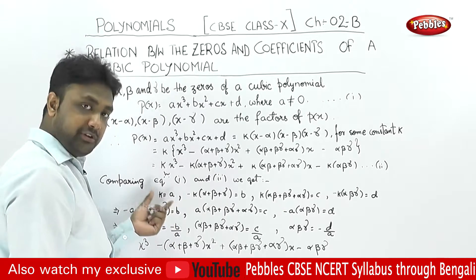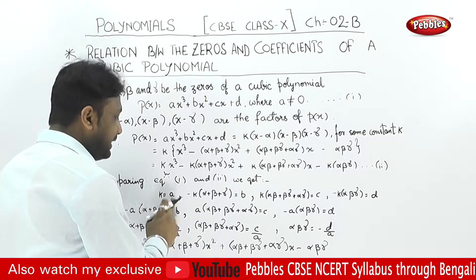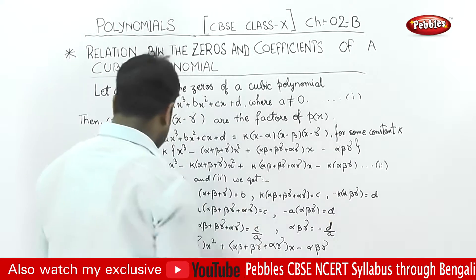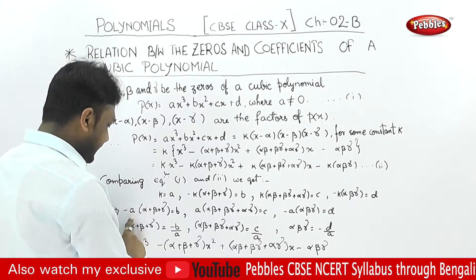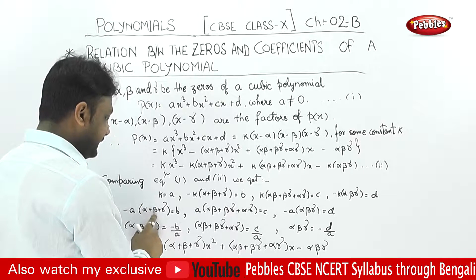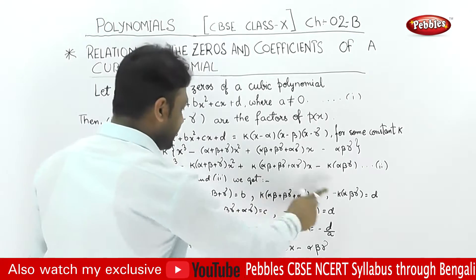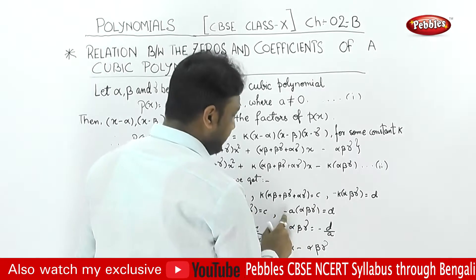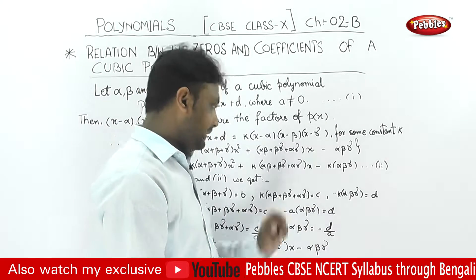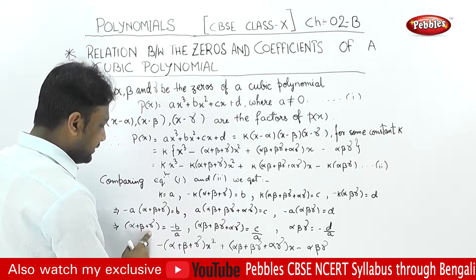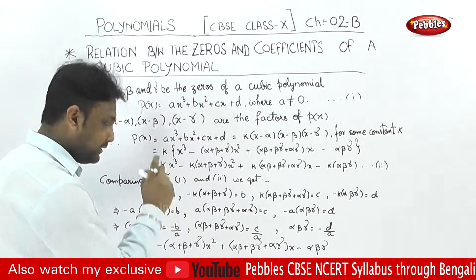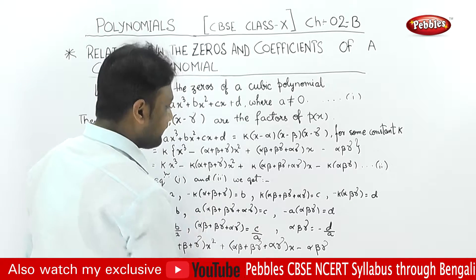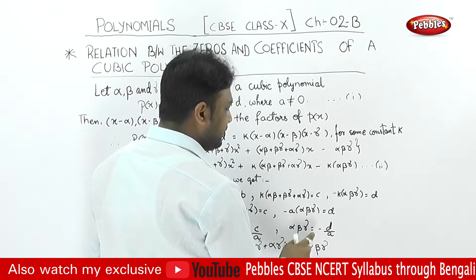Substituting k equals to a into the equations: alpha plus beta plus gamma equals to minus b by a. Alpha beta plus beta gamma plus alpha gamma equals to c by a. And alpha into beta into gamma equals to minus d by a. These are the required relations.